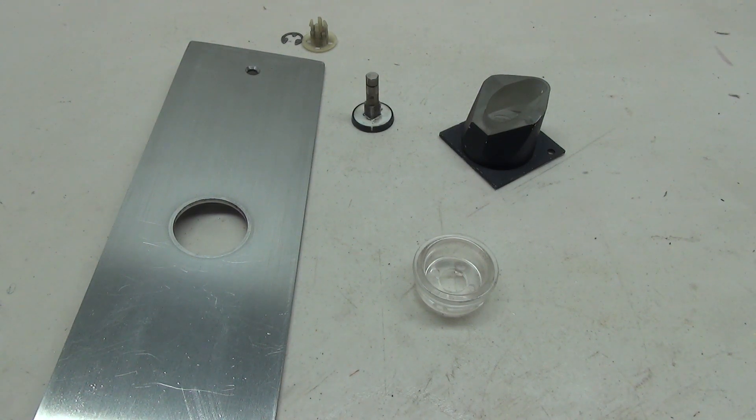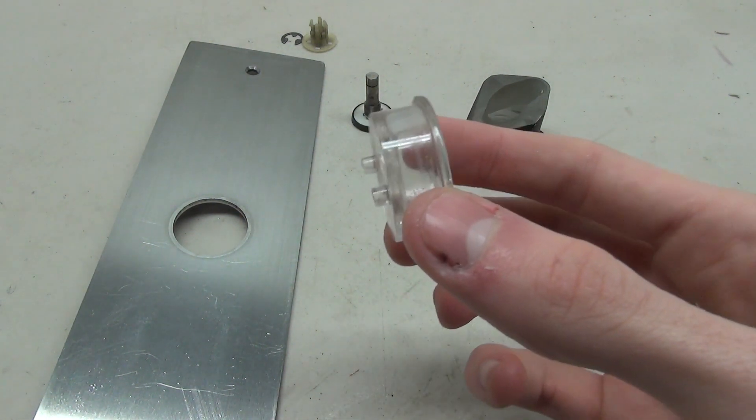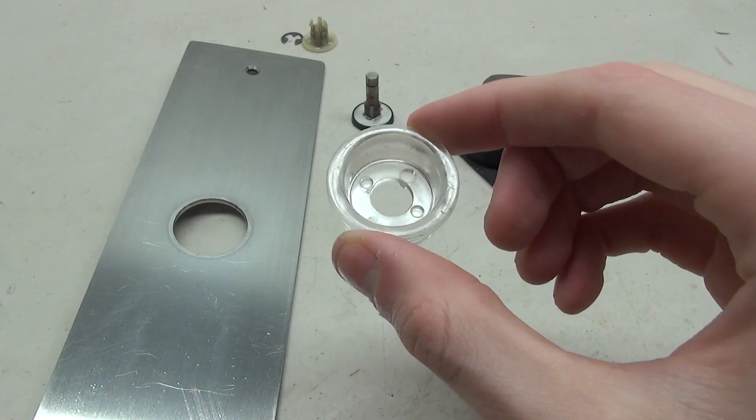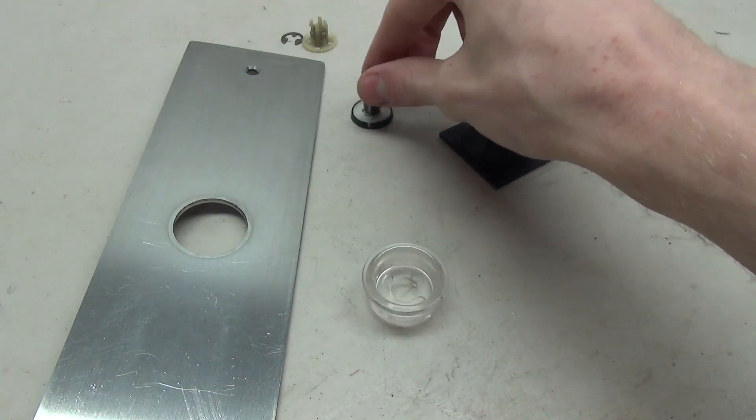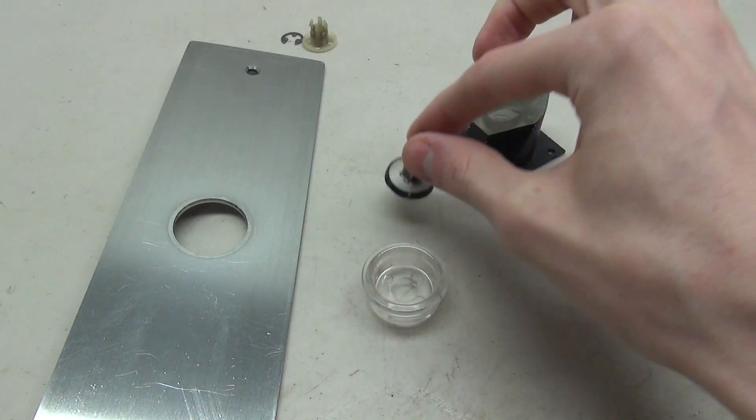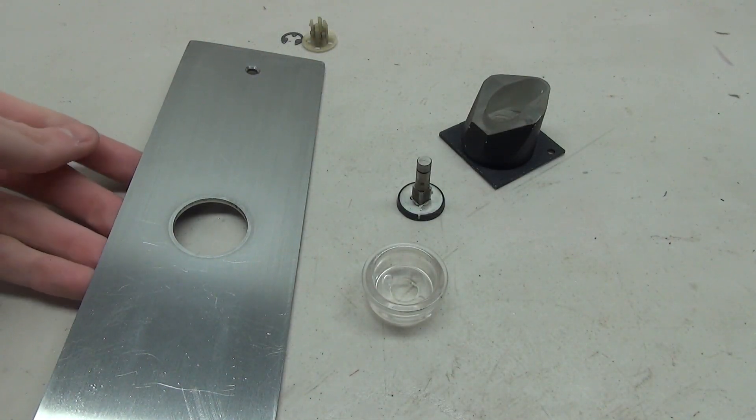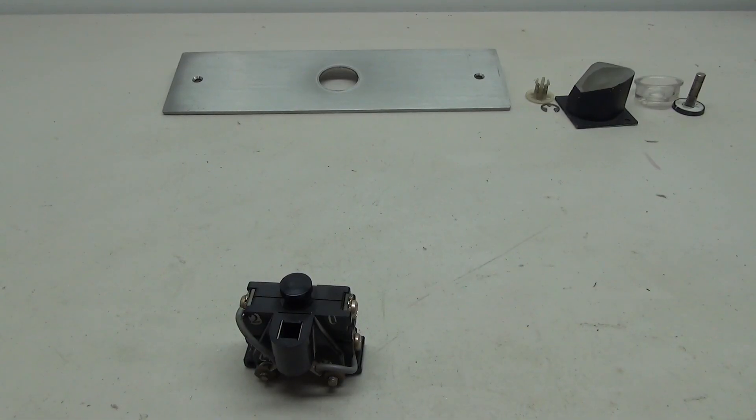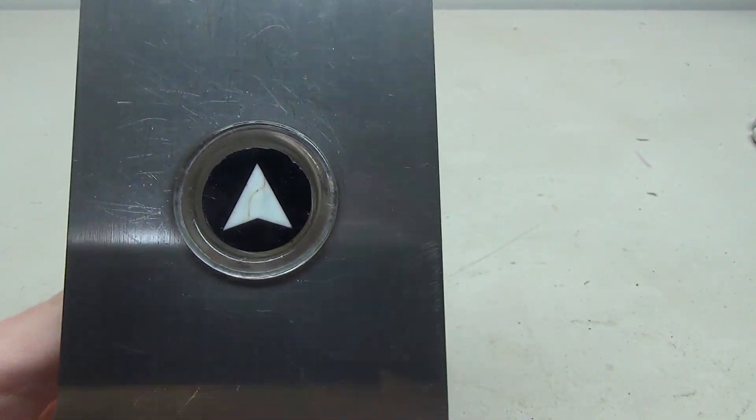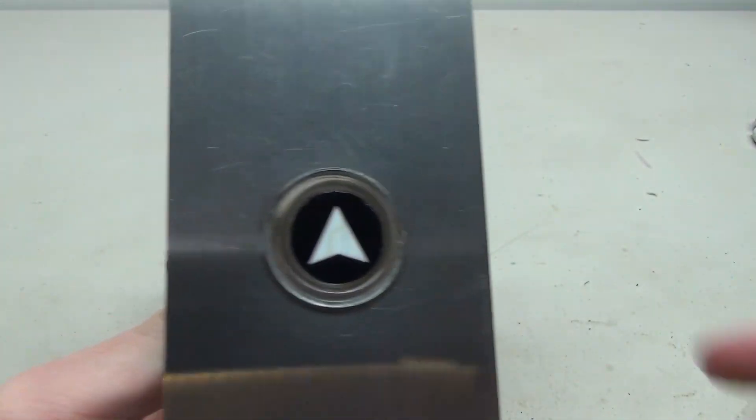And while I had all the pieces apart, I decided to go ahead and clean this thing up. It wasn't in bad shape by any means, but I just cleaned up the little ring a little bit, kind of wiped off the button cap, and gave the plate a nice shine. So let's go ahead and put this button all back together. And there we have the button put back together, and it looks very nice.